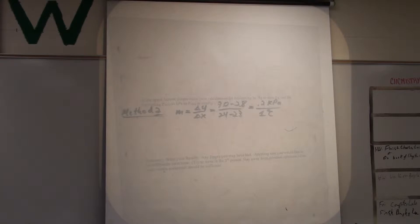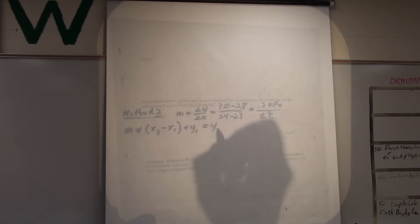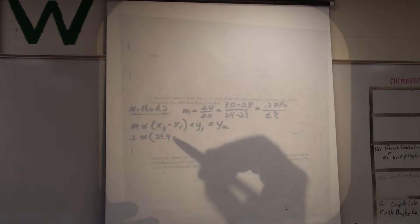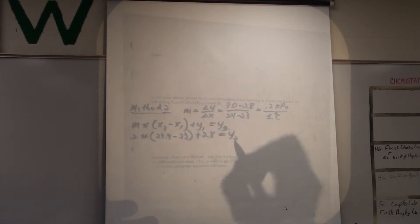I am going to use the second method for calculating or interpolating where m times x3 minus x1 plus y1 is equal to y3. So my slope is 0.2 times x3 which is 23.9, that's my temperature that I want to find it at, minus my starting x value which is 23 plus my starting y value which is 2.8. And that will give me my vapor pressure.